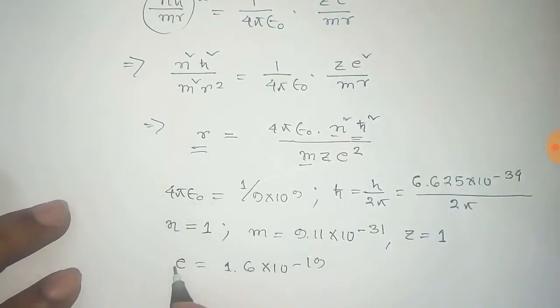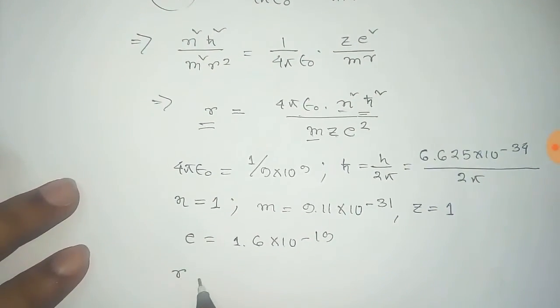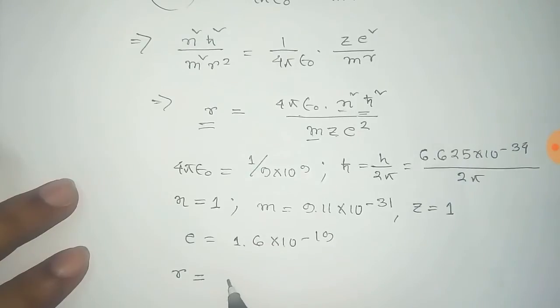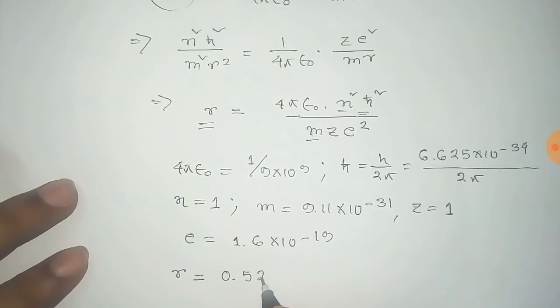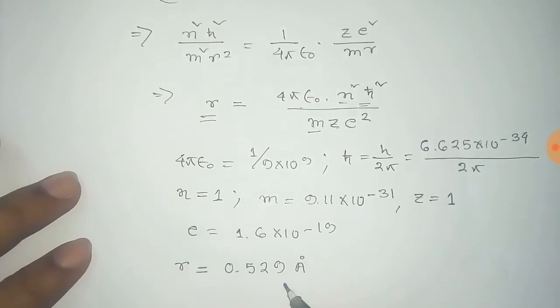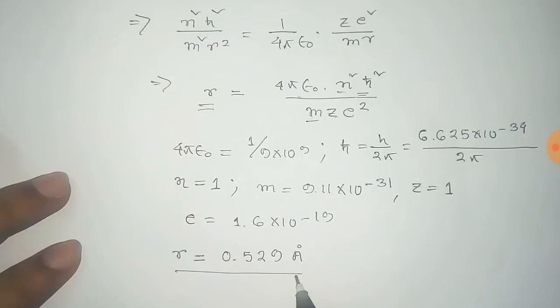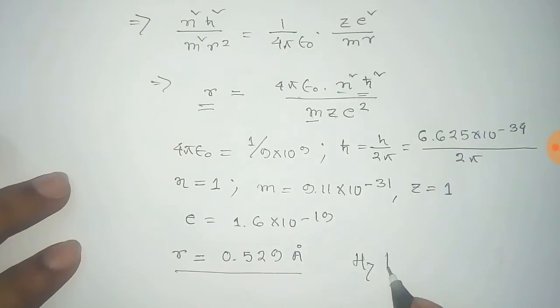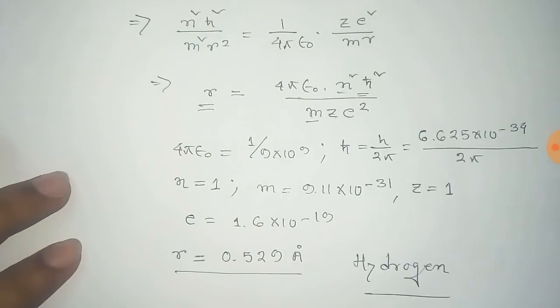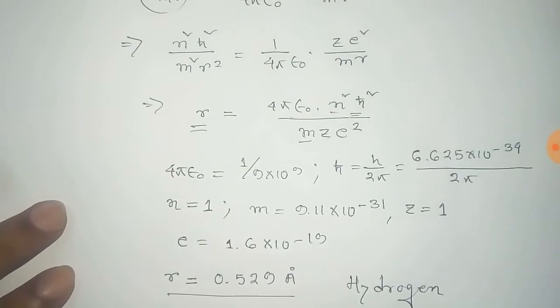Here we consider the ground state, so N equals 1. Putting all these values, we get R equals 0.529 angstroms. This is called the Bohr radius, and this is for the hydrogen atom at ground state.